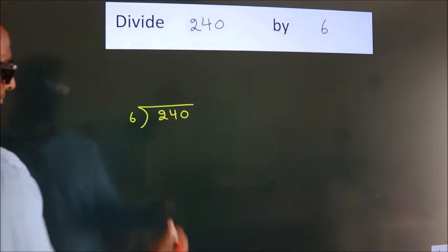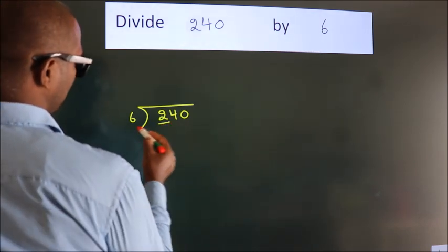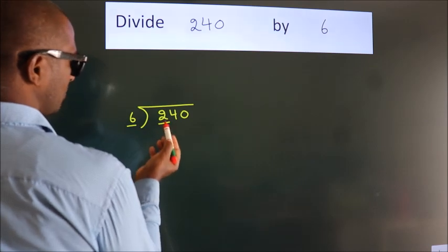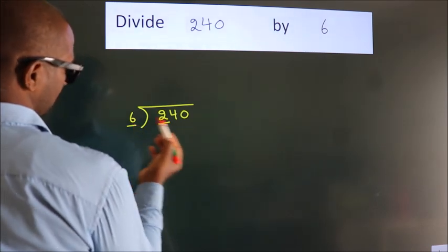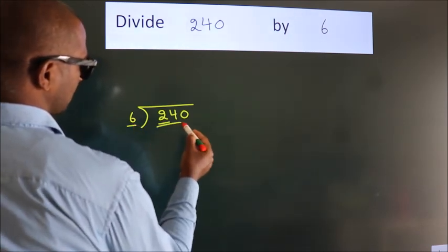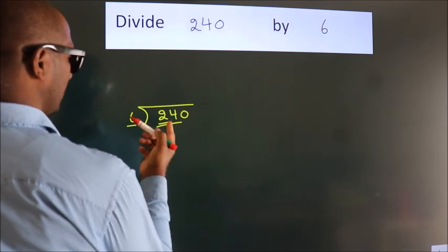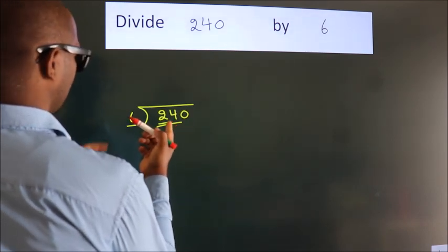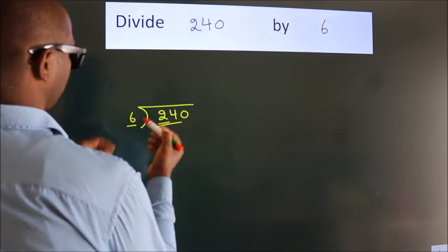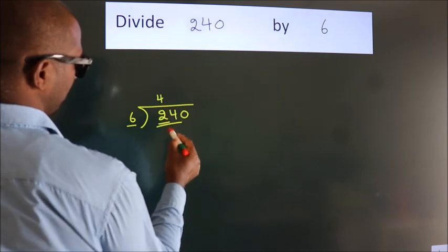Next. Here we have 2. Here 6. 2 smaller than 6. So we should take 2 numbers. 24. When do we get 24? In 6 table, 6 fourths, 24.